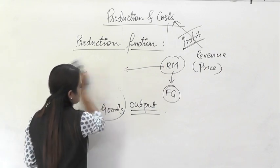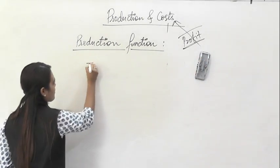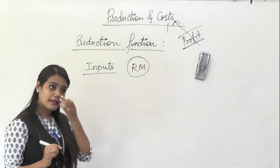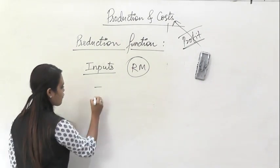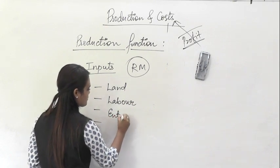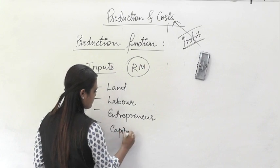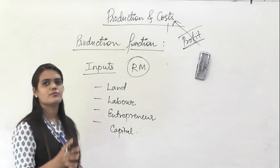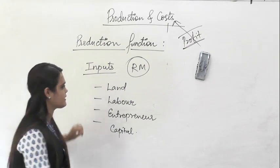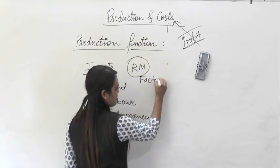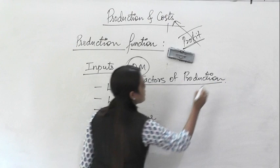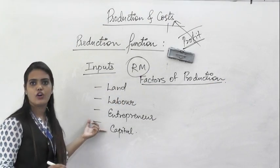When you talk about inputs, for convenience you understand them to be raw materials. Inputs in economics are divided into four factors: land, labor, entrepreneur, and capital. Henceforth, in any concept of economics, when you come across the word 'input,' you always have to think about these four factors. They are called factors of production — the inputs that the producer uses in order to carry out the production.